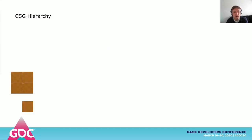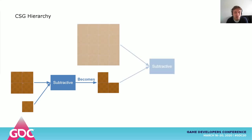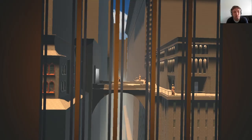To make a level, first you have a couple of brushes. Then you use an operation on them, and you create a shape that is a combination of both shapes. Then you use that shape on another shape, and if you do that with enough shapes, you end up with a level.